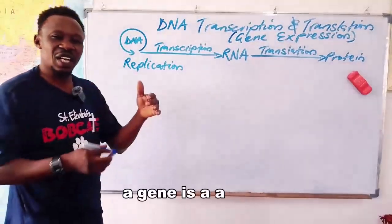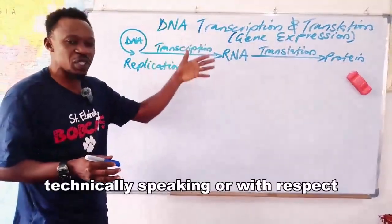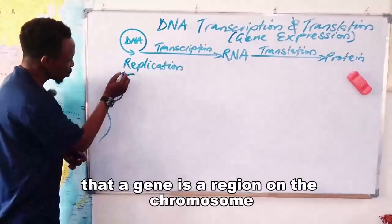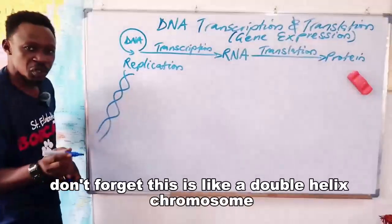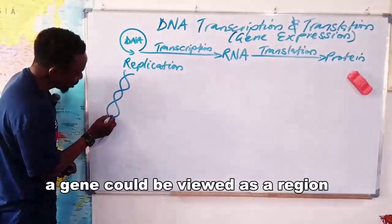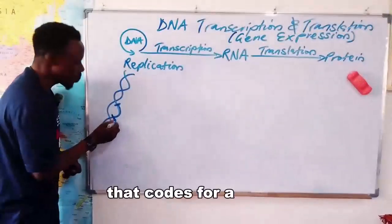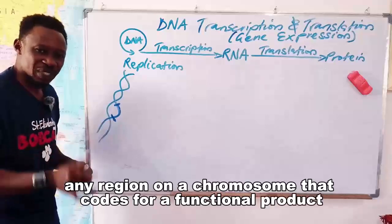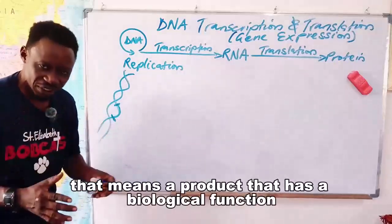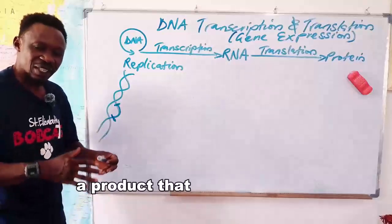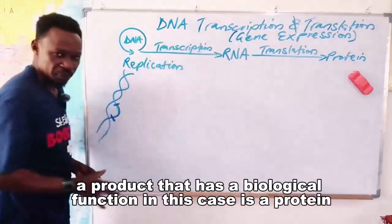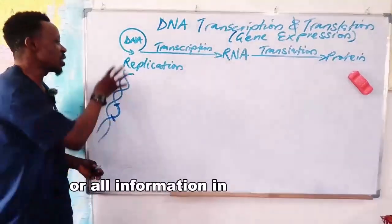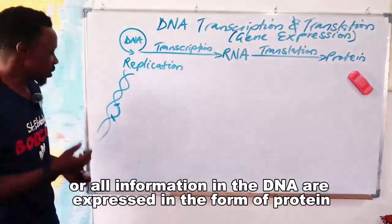A gene, technically speaking — and with respect to this topic — I would like to define a gene in the strictest form: a gene is a region on the chromosome. Don't forget the chromosome is like a double helix. A gene could be viewed as any region on a chromosome that codes for a functional product — that means a product that has a biological function, in this case most often a protein.